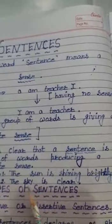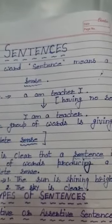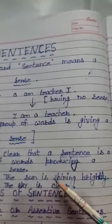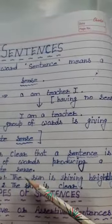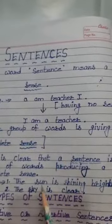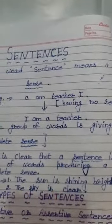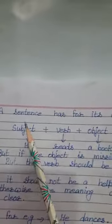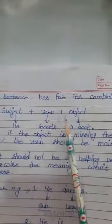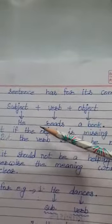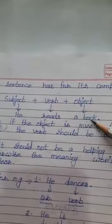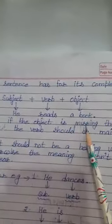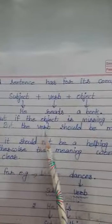Now students, in a sentence, what do we need? We need subject plus verb plus an object. But sometimes we see that a sentence is clear with only the subject and the verb, as long as it gives a clear-cut meaning to the reader. A sentence has for its completion: subject plus verb plus object. For example, 'He reads a book' — he is the subject, reads is the verb, and a book is the object. But if the object is missing, then the verb should be the main verb.